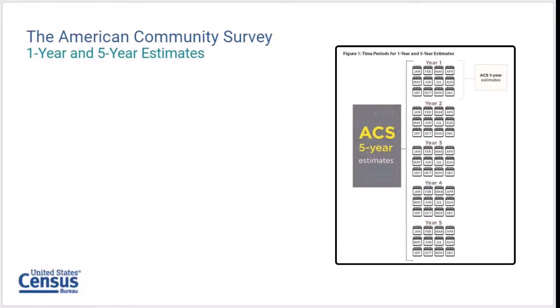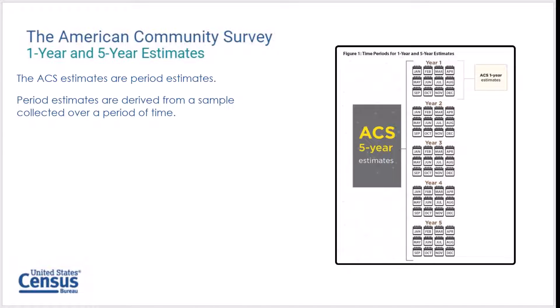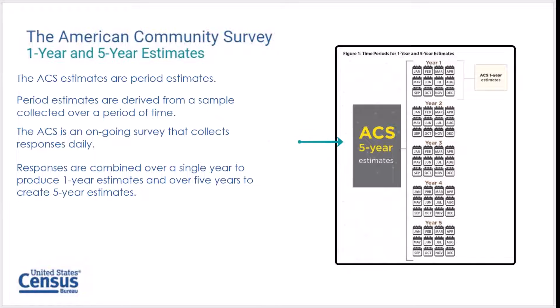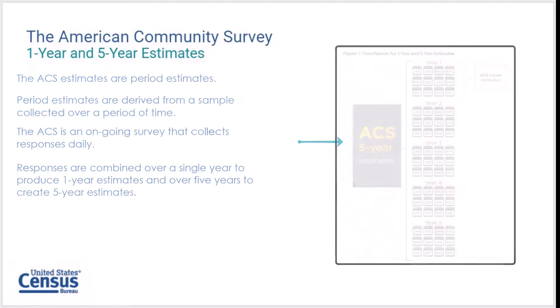Single-year and multi-year estimates from the ACS are all period estimates derived from a sample collected over a period of time, as opposed to a point in time. Period estimates are produced by combining data collected across a specific period. The ACS is an ongoing survey that collects responses every day of the year. Those responses are combined over a single year to produce one-year estimates and over five years to create five-year estimates. The image shown here illustrates the time periods for each.